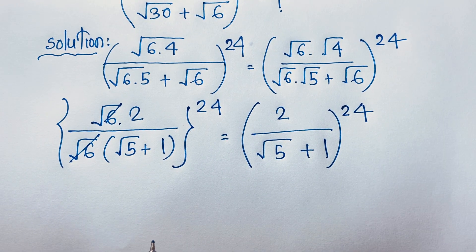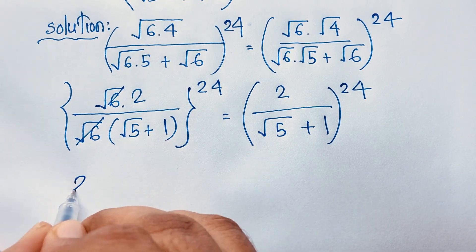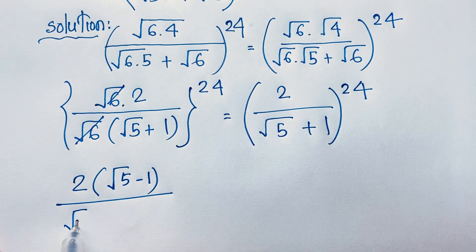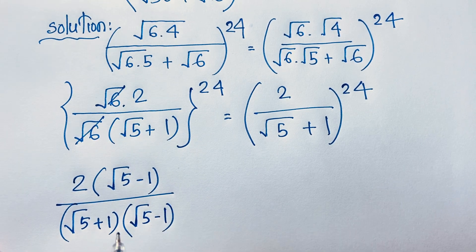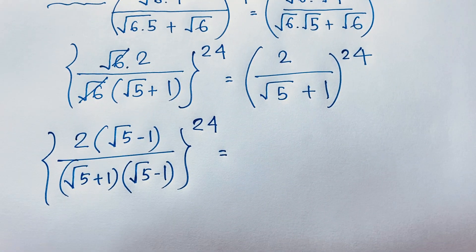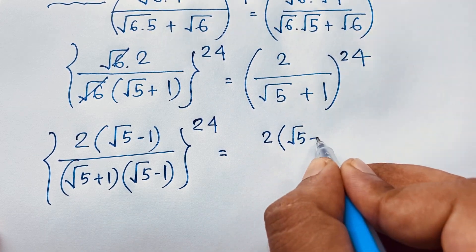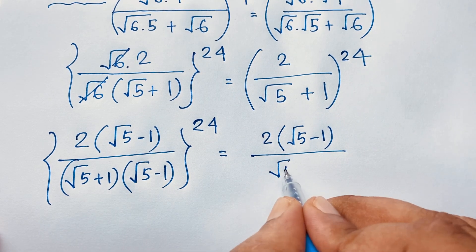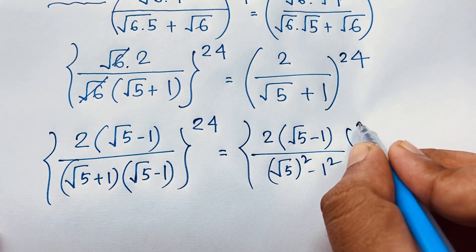Then you can see this expression: we have 2 over (√5 + 1). I multiply the denominator by (√5 − 1) and also multiply the numerator by (√5 − 1), giving 2(√5 − 1) over (a + b)(a − b) = a² − b², all to the power 24.